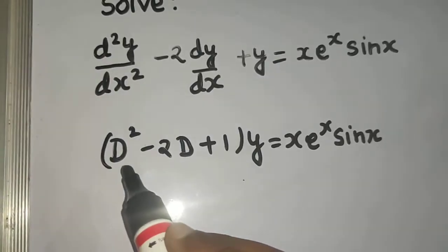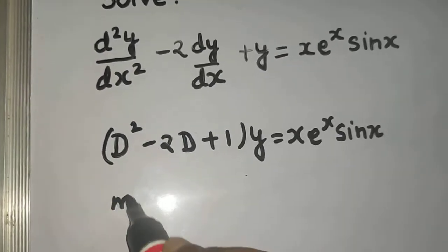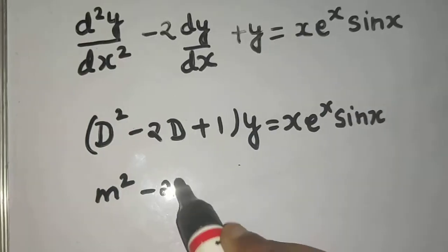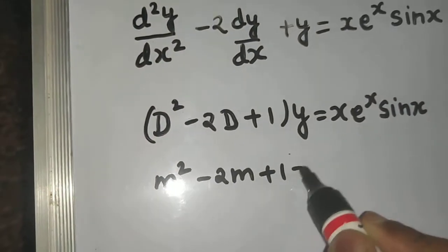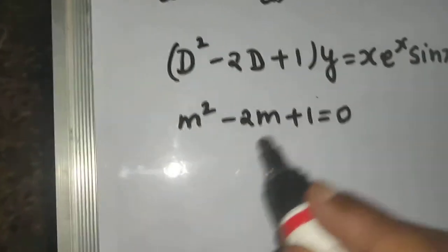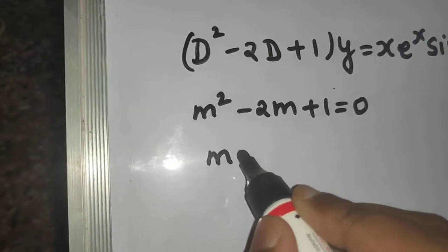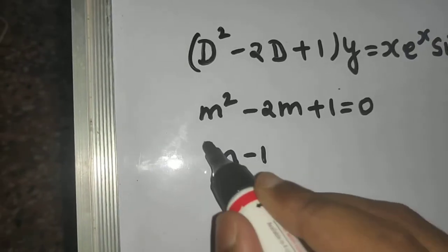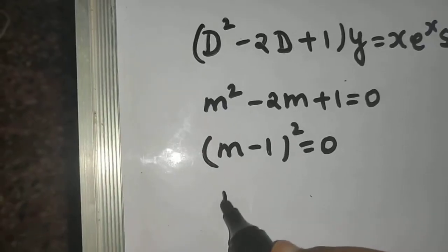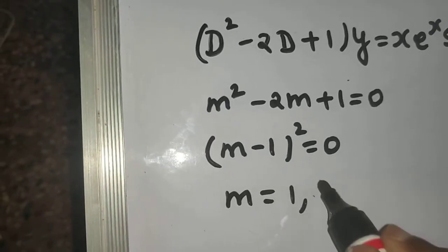For the auxiliary equation, replace D by m: m² - 2m + 1 = 0. This factors as (m - 1)² = 0, giving m = 1 and m = 1, which are repeated roots.